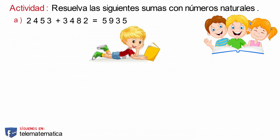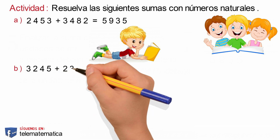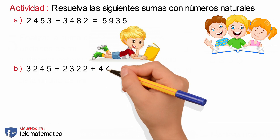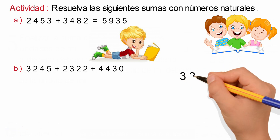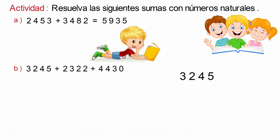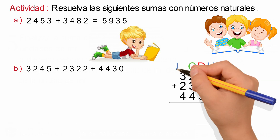A continuación veremos cómo realizar este proceso para la suma con tres sumandos. Literal B: 3.245 más 2.322 más 4.430. Comenzaremos escribiendo los números verticalmente, teniendo en cuenta ubicar la unidad debajo de la unidad, la decena debajo de la decena, la centena debajo de la centena y la unidad de mil debajo de la unidad de mil. Antes de comenzar a sumar, identificaremos la columna de las unidades, la columna de las decenas, la columna de las centenas y la columna de las unidades de mil.